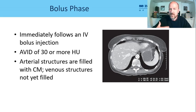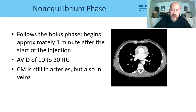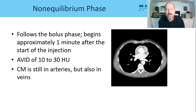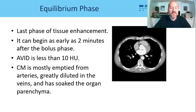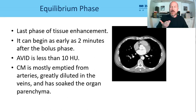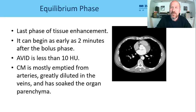There are three basic enhancement phases. The bolus phase is measured by an arterial venous iodine difference (AVID) — measured between the descending aorta and inferior vena cava. An AVID of 30+ Hounsfield units means we're in the bolus phase, with contrast still being injected. The non-equilibrium phase follows, with an AVID of 10–30 HU. Finally, the equilibrium phase shows an AVID of about 10 HU, meaning contrast has distributed throughout tissues and is being diluted.